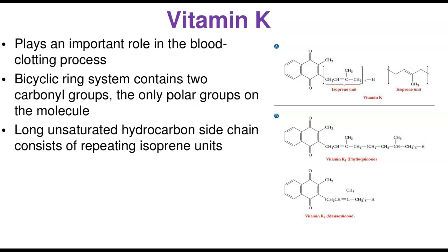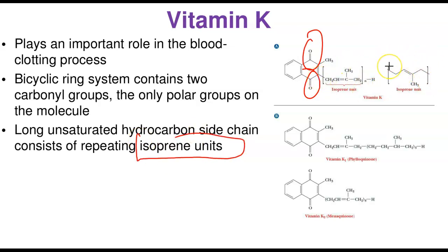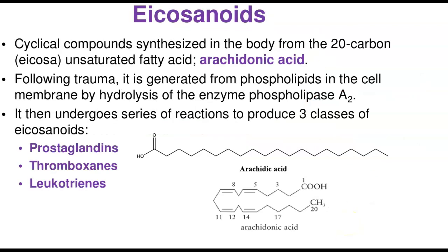Vitamin K plays an important role in blood clotting; people deficient in vitamin K find it difficult for blood clotting to take place, which can lead to hemorrhage. This is seen in hemophilic disease, where treatments include administering sufficient vitamin K. Structurally, it is a bicyclic system containing carbonyl groups — the only polar part of the molecule — and a long isoprenoid side chain consisting of repeating isoprenoid units. It exists in many forms: K1 is phylloquinone and K2 is menaquinone.